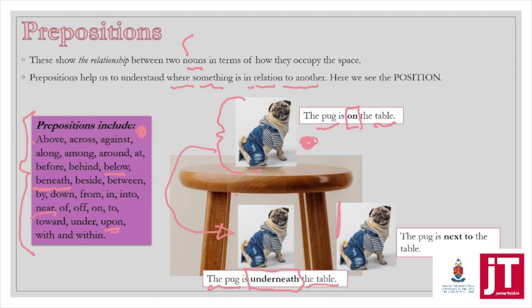The third example: the pug is next to the table. Here's the table, and as you can see, this pug is sitting next to the table. Perhaps I could also say 'against the table,' or 'around the table,' or 'at the table.' If he was behind the table, he would be on the other side. I hope that this helps you get a clearer picture of what a preposition actually is. Please write down the different examples of prepositions.